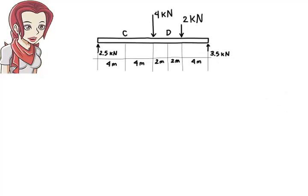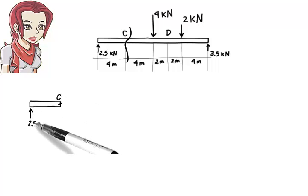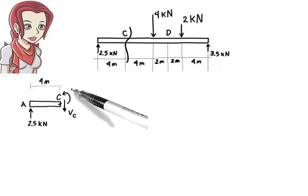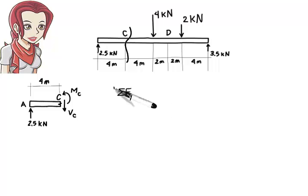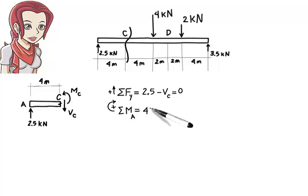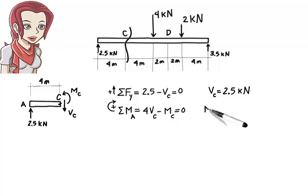Now, to determine the shear and moment at point C, we conceptually cut the beam at C and draw the free body diagram for either the left or right segment, whichever is more convenient. Let's pick the left segment. Note that I did not draw the internal axial force at C, since there are no applied forces in the X direction. From the equilibrium equations, we get VC equals 2.5 and MC equals 10. Here are the results shown on the beam.